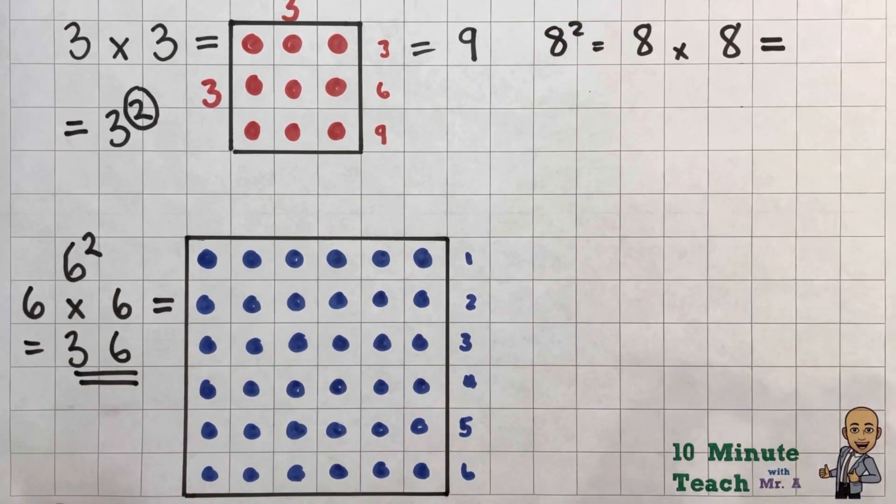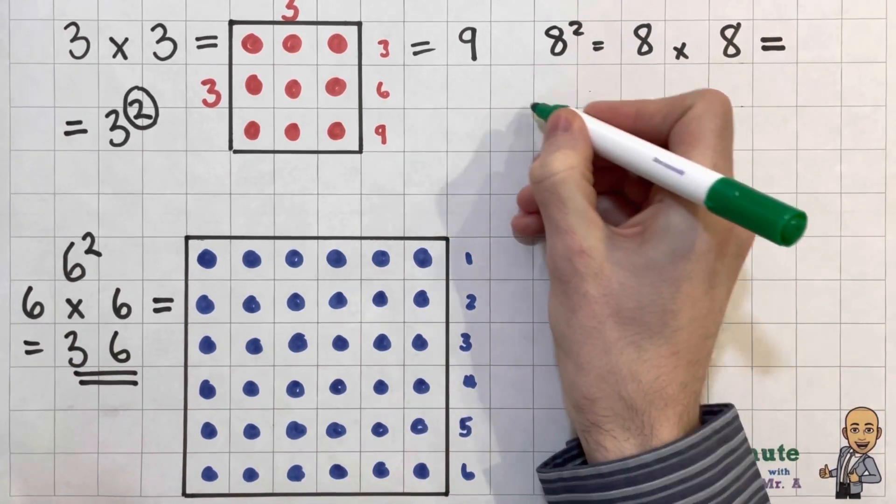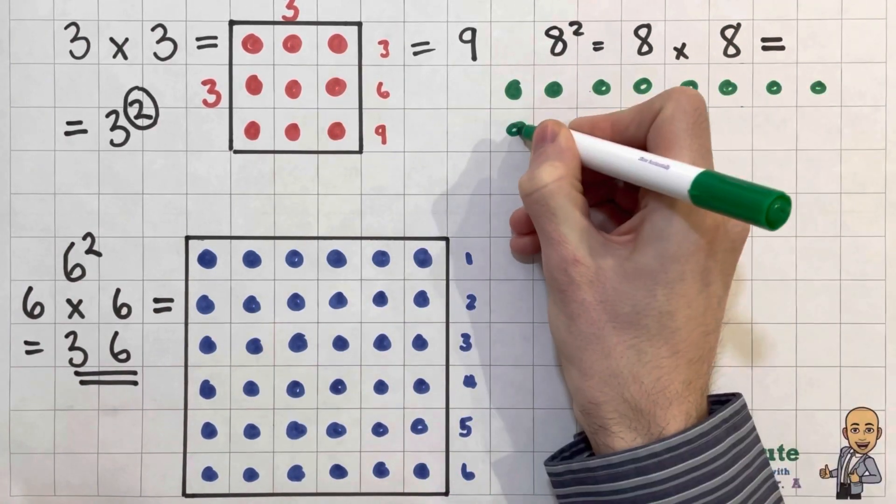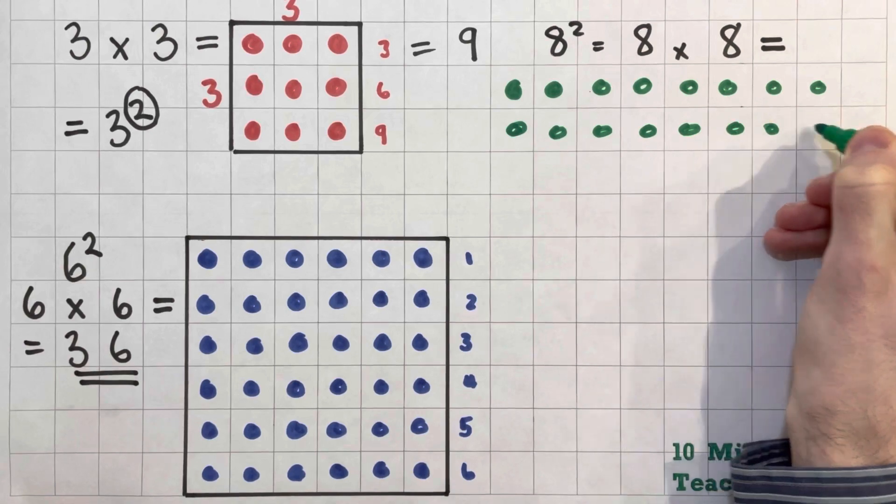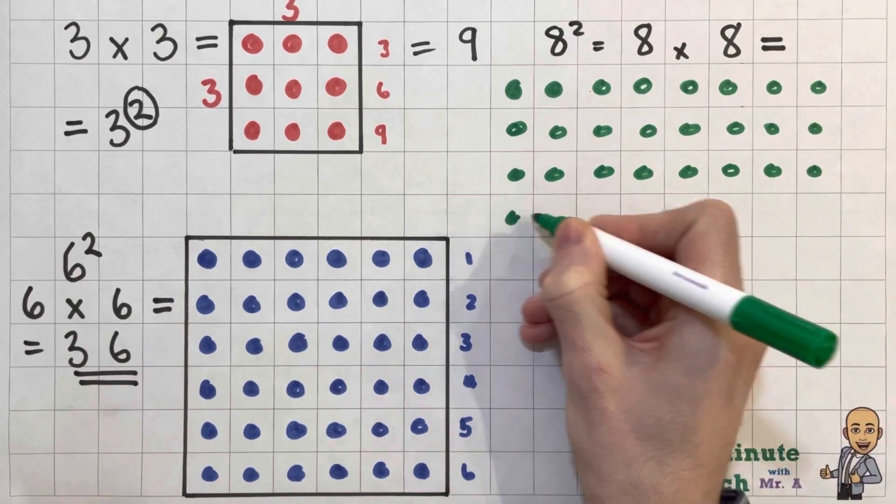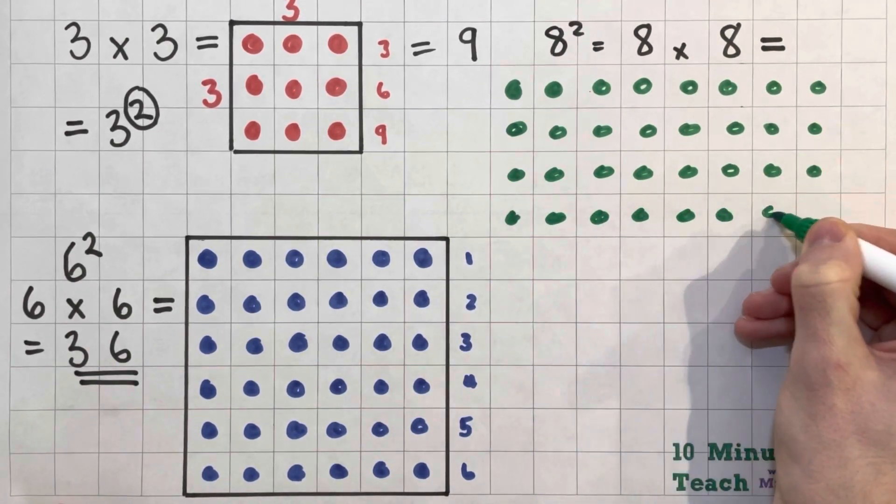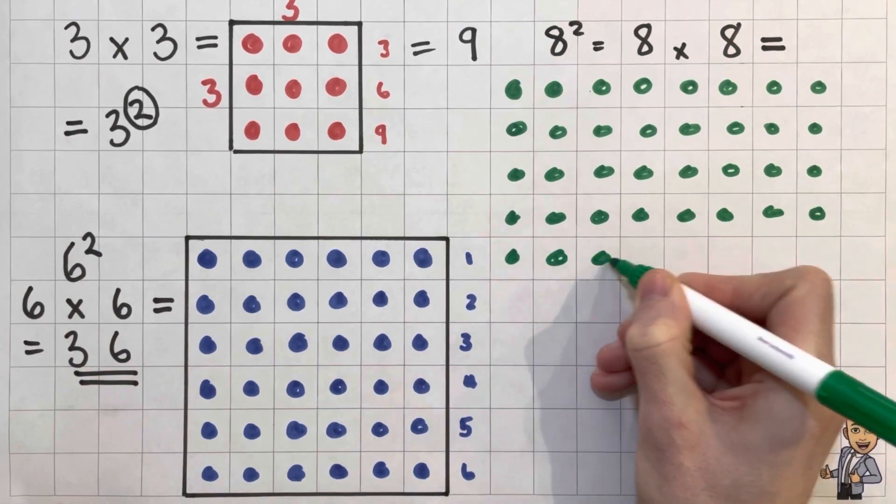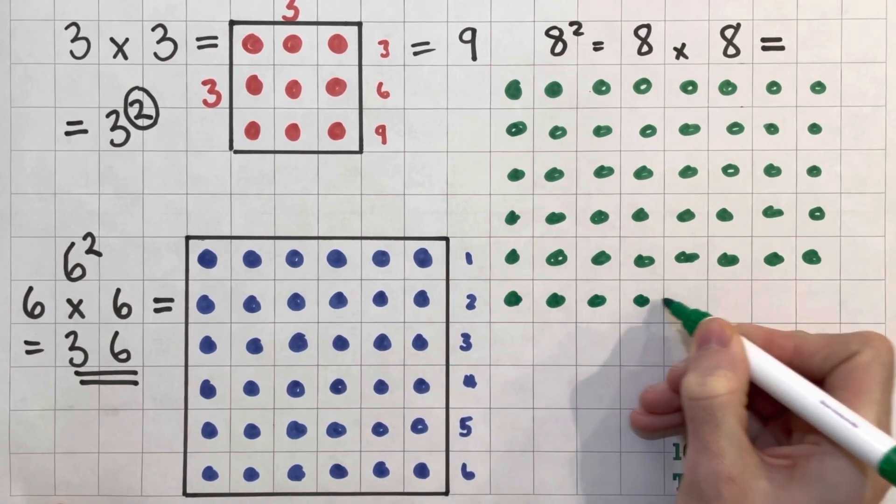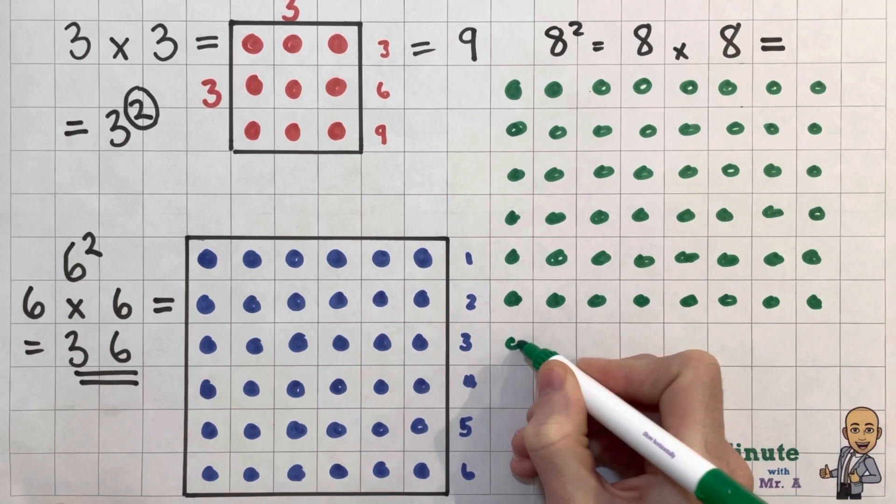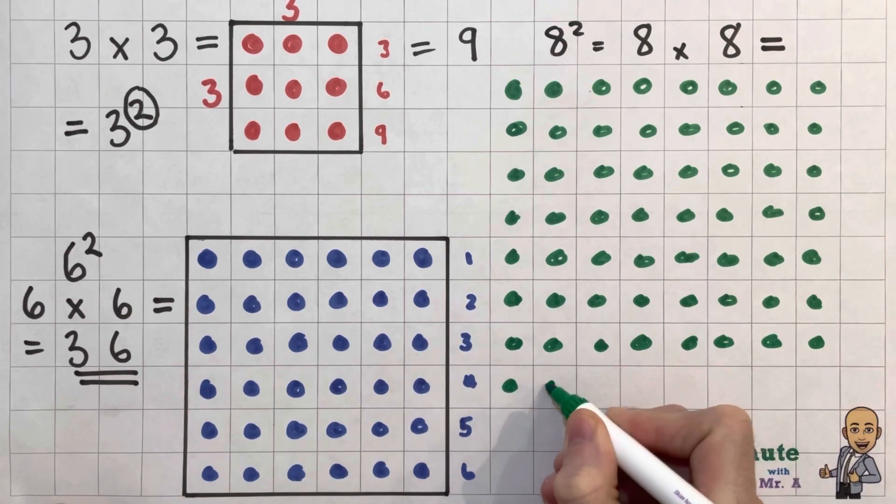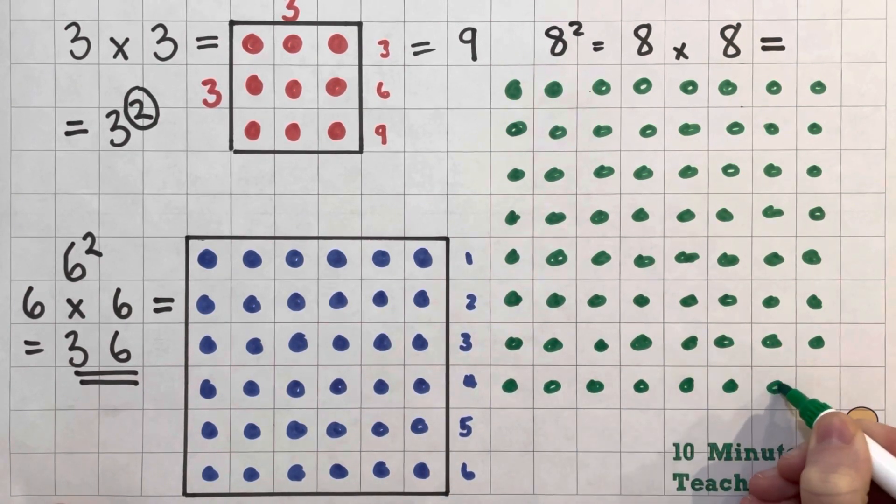Right then. So here we are. So let's go. 1, 2, 3, 4, 5, 6, 7, 8. That's 2 eights. There's 3 eights. 4 eights. 5 eights. 6 eights. 7 eights.